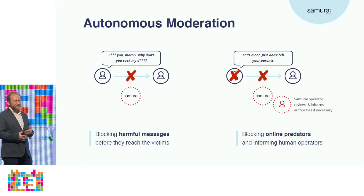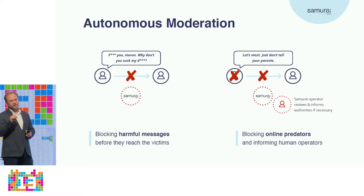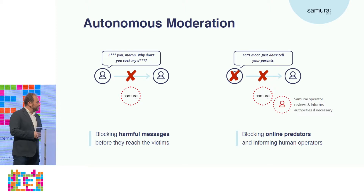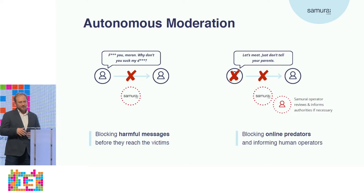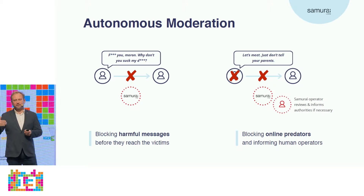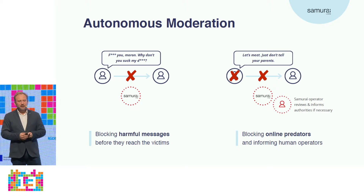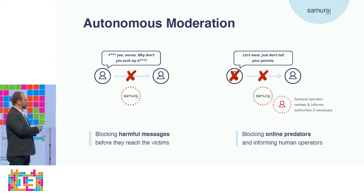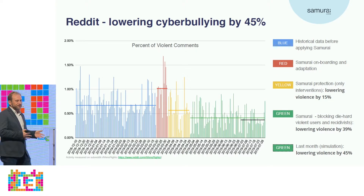The AI reads all messages and determines whether something is cyberbullying or just a normal conversation. For blocking online predators, the system spots them, a human verifies, and then we follow the law accordingly. This is our first use case.